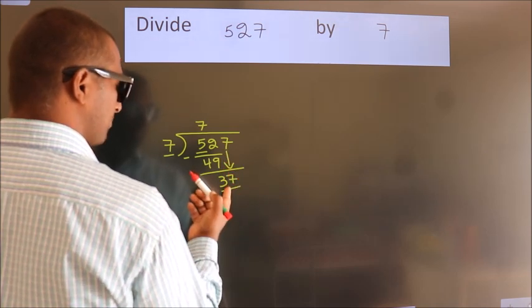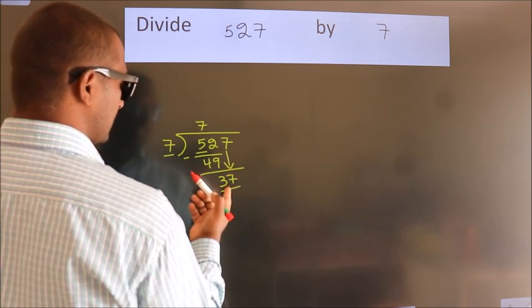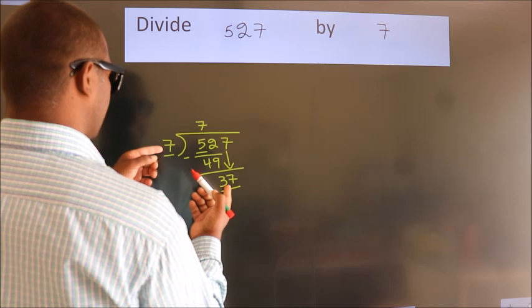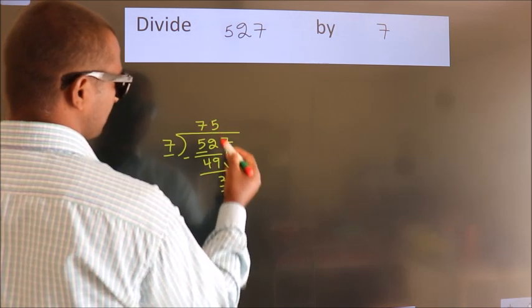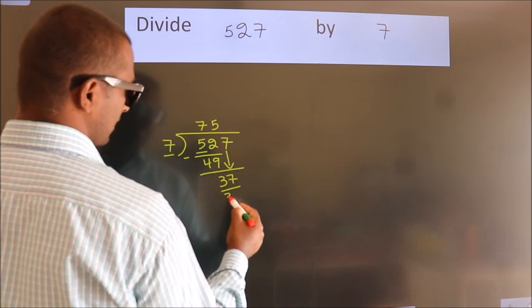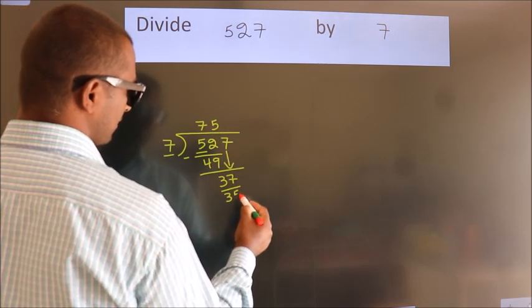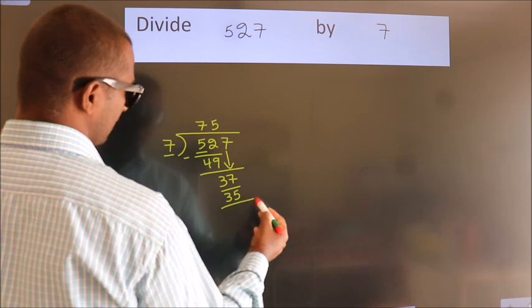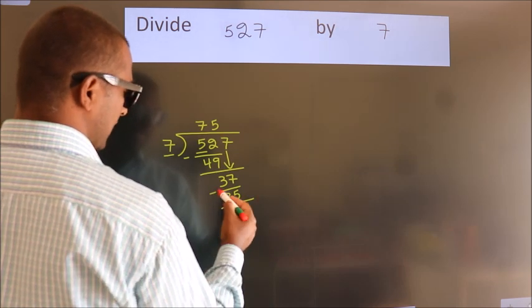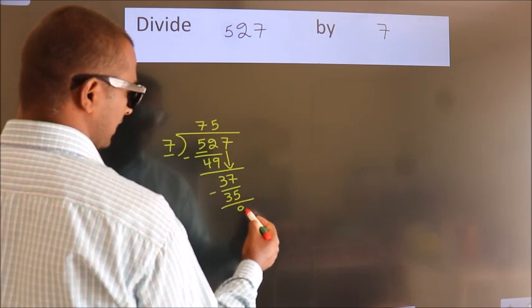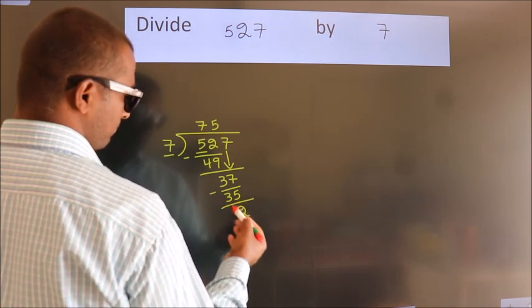A number close to 37 in the 7 table is 7 fives — 35. Now we subtract. We get 2.